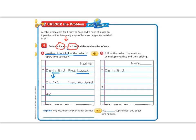So she gets the answer 42 because then she multiplies 3 times 7 times 2. But that's not correct. So let's do it in the correct order and see what number we get instead.